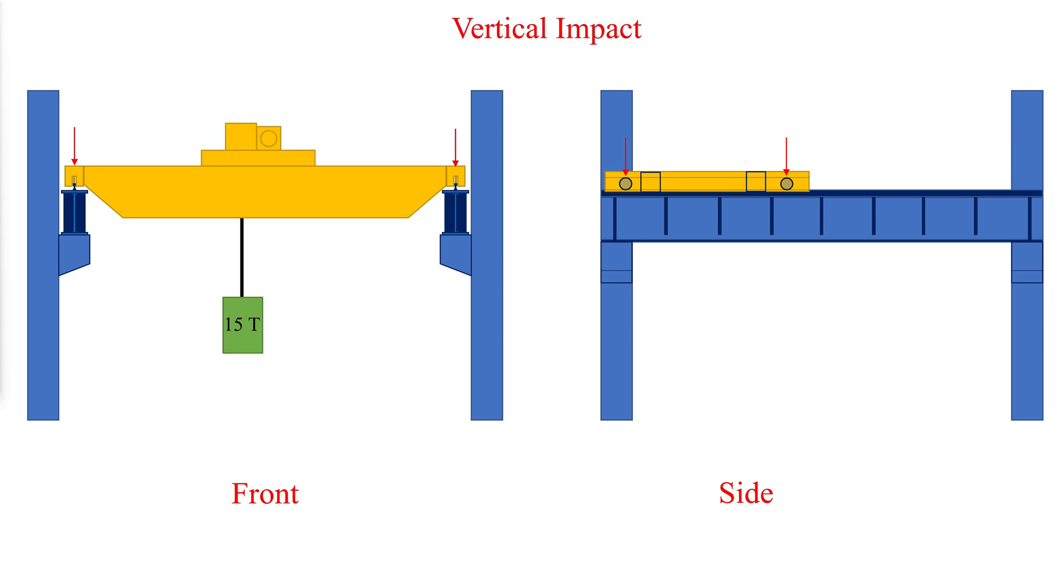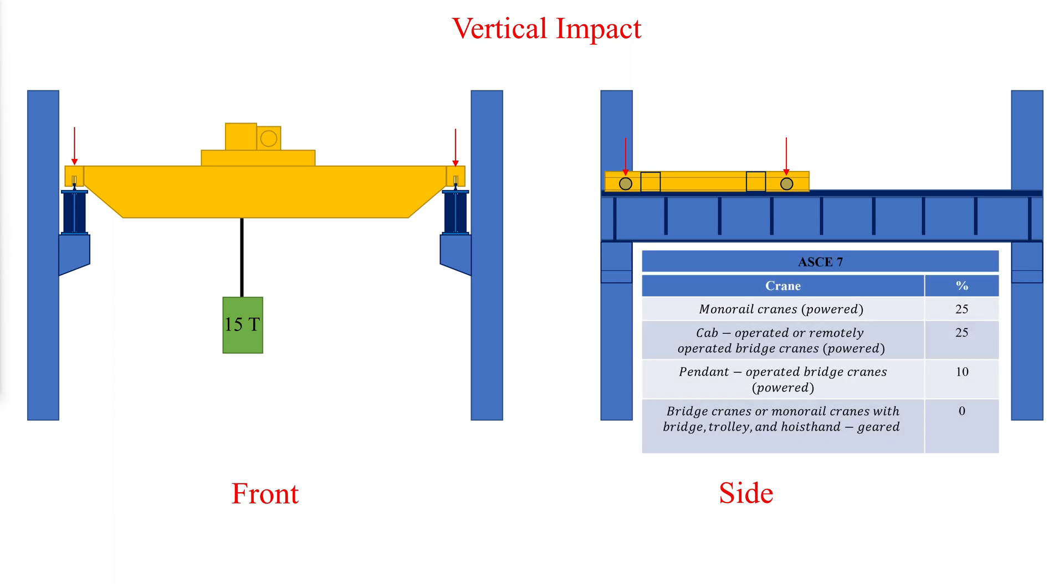Vertical impact percentages are then multiplied by the maximum wheel loads. The percentage factors contained in ASCE 7-16 are as follows.